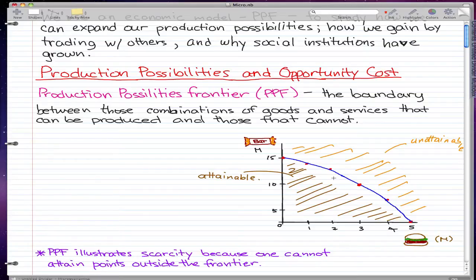Any point on the production possibilities frontier, which is this blue line, such as the red dot here at three hamburgers and ten energy bars, we can produce. We can make three burgers and ten energy bars, or two burgers and five energy bars. But how about five hamburgers and fifteen bars? Five hamburgers and fifteen bars is in the unattainable zone.